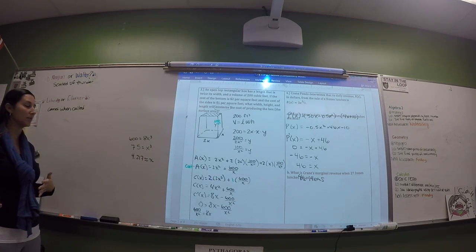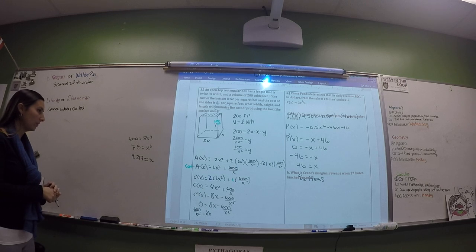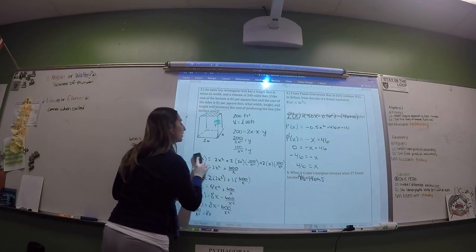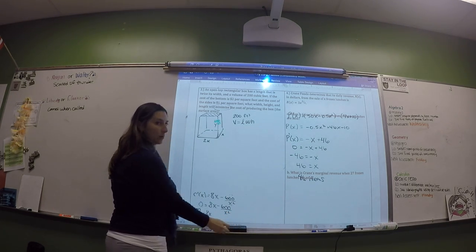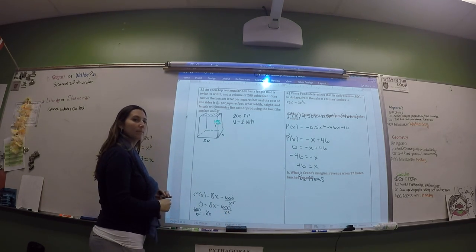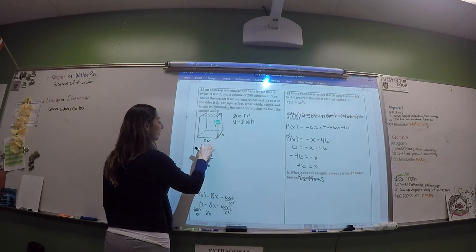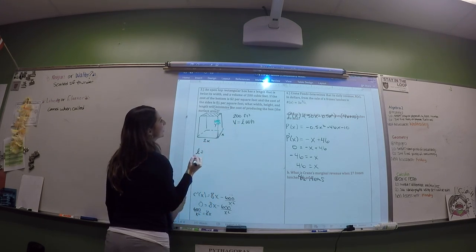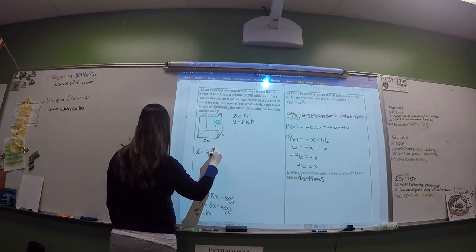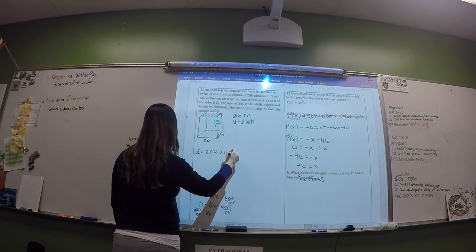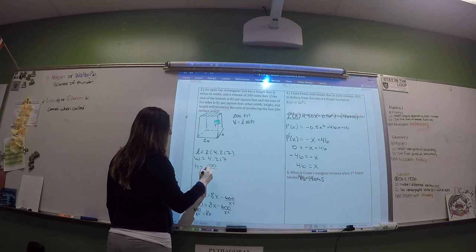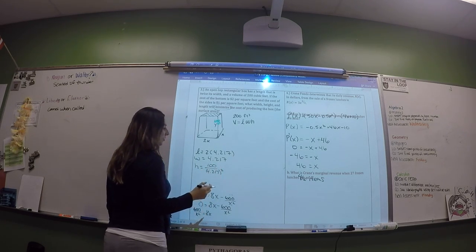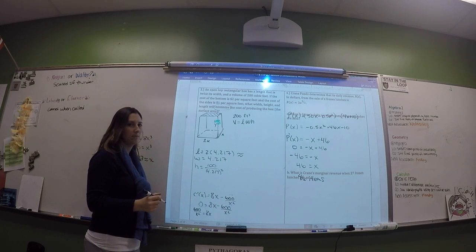The question asks for width, height, and length to minimize cost. The width is X ≈ 4.217 feet. The length is twice the width. The height is 100 over X squared. Plug X into your calculator for each dimension and include units.